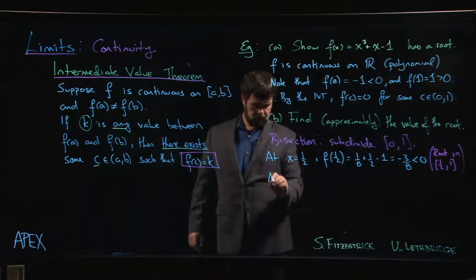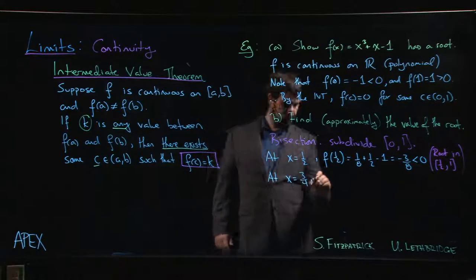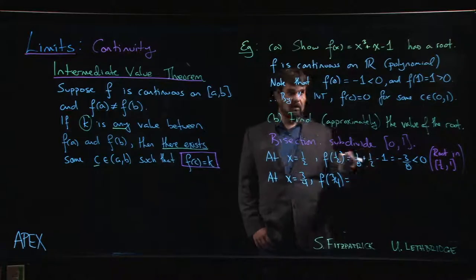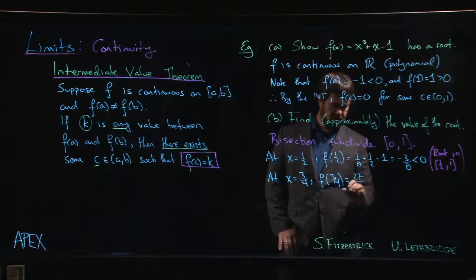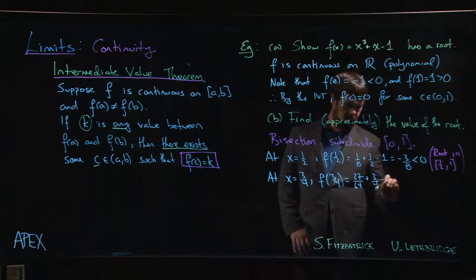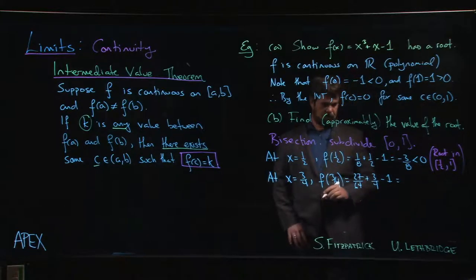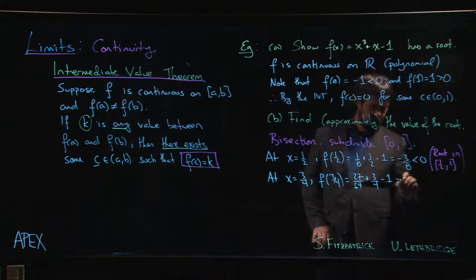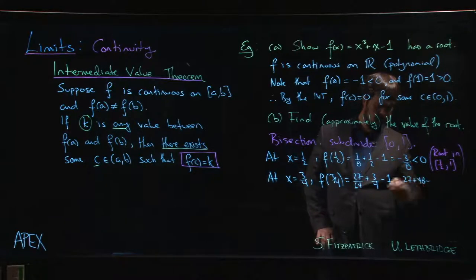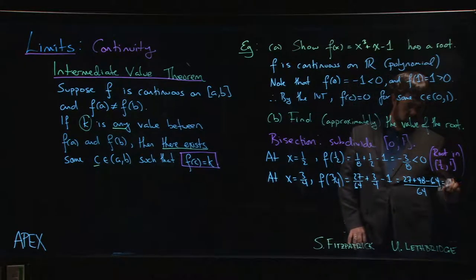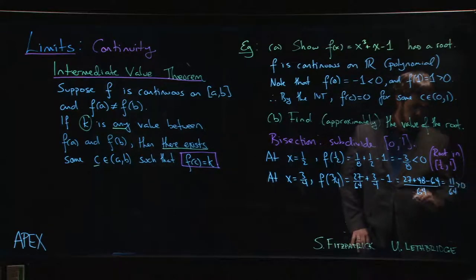So then we split the difference again. So f at three-quarters. And this is probably as far as we want to go without using a calculator. But let's go ahead and do it so you get the idea of what's going to happen. So if we cube three-quarters, that's 27 over 64 plus three over four minus one. So 4 times 16 to get 64. So 3 times 16 is 48. So we have 27 plus 48 minus 64 over 64. And we're at 11 over 64, which is positive.